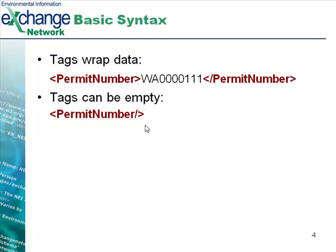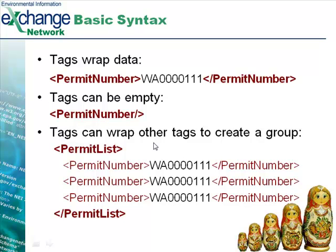Tags can be empty. To represent an empty tag, we just put the slash at the end of the element name. Tags can also wrap other tags to create a group. In the example we saw before, we have a permit list with a list of permit numbers. By this way, we can group data within tags as containers. This is kind of like the Russian doll example where inside one tag might be another and inside that might be another. This creates a hierarchical structure to XML, so it can be nested very many levels deep depending on the type of data you're looking at.